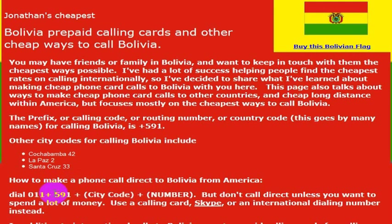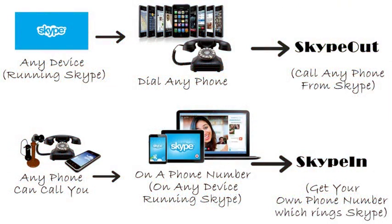The country code for Bolivia is 591. But I wouldn't really recommend calling direct — your phone company will charge you a lot of money. If you want to call a phone number, I really recommend using Skype. We detail how to make free and low-cost calls using Skype in other videos.